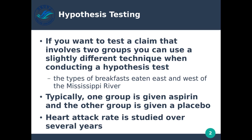So if you want to test a claim that involves two groups, you can use a slightly different technique. For example, the types of breakfasts eaten east and west of the Mississippi River. In this case, we're interested in what types of breakfasts are eaten east of the Mississippi and west of the Mississippi. Notice that these are completely independent groups that we're testing.